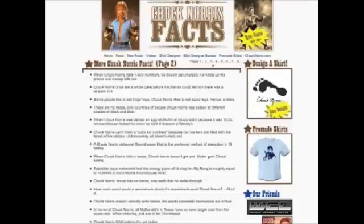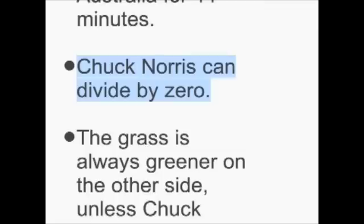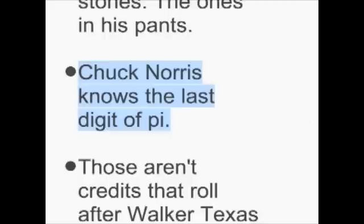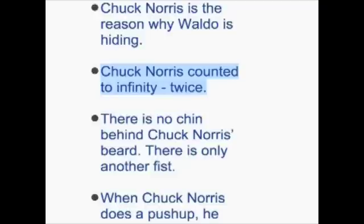So it's pretty much agreed we can't divide by zero — unless, of course, you're Chuck Norris. If you go to the site chucknorrisfacts.com, you'll find that Chuck Norris can divide by zero. And while we're there, we discover that Chuck Norris knows the last digit of pi, and Chuck Norris has counted to infinity twice.